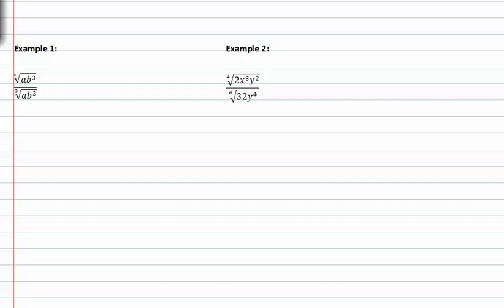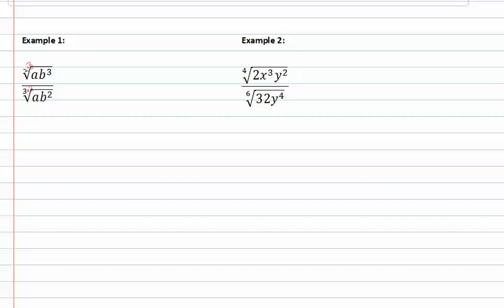In example one, we have something with an index of two over something with an index of three. The common index would be six, so we have to build this one up by three and this one up by two. So we have an index of six in the numerator and an index of six in the denominator. Remember, we must also multiply that same value that we built up the index by on the exponents.